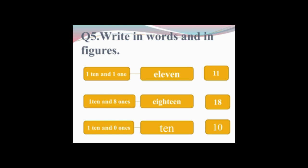Read the next question: 1 ten and 8 ones. The first digit is 1 and the second digit is 8 — 1 8 makes 18. The spelling of 18 is E-I-G-H-T-E-E-N — 18. The next question is 1 ten and 0 ones. Here is 1 and here is 0 — 1 0 makes 10. The spelling of 10 is T-E-N — 10.